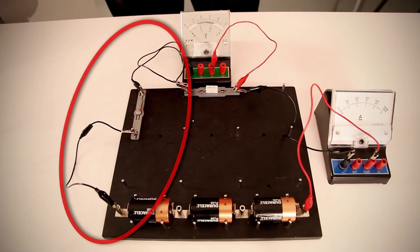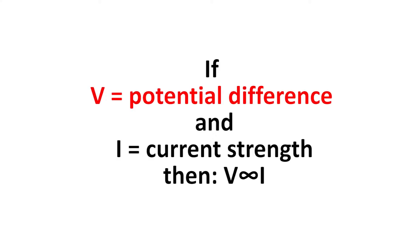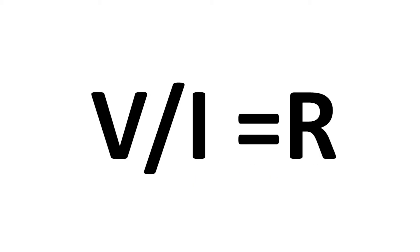Note that the negative side of the circuit is black and the positive side is red. If V is the potential difference and I is the current strength, then V is proportional to I. From this, we find that the potential difference divided by the current strength equals the resistance. Mathematically, this can be expressed as V/I = R.